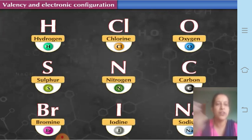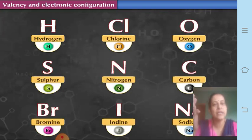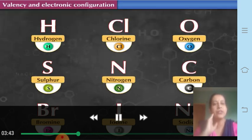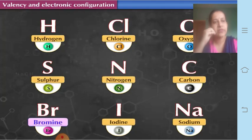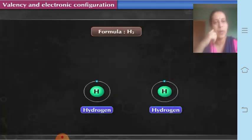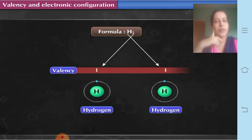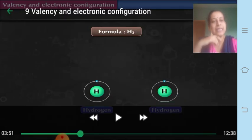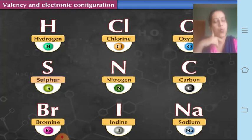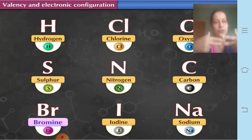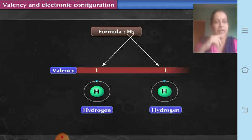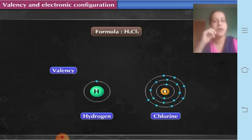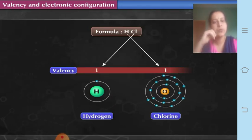Let us consider the molecular formulae of different compounds to learn about their valency. Take hydrogen, chlorine, oxygen, sulfur, nitrogen, carbon, bromine, iodine, and sodium. The formula of hydrogen molecule is H₂, so valency of hydrogen is 1. In HCl, valency of hydrogen is 1 and that of chlorine is also 1. In water, valency of hydrogen is 1 and that of oxygen is 2. In hydrogen sulfide, valency of hydrogen is 1 and that of sulfur is 2.